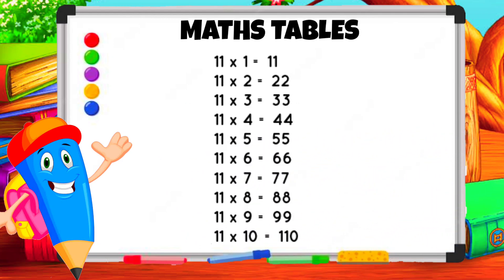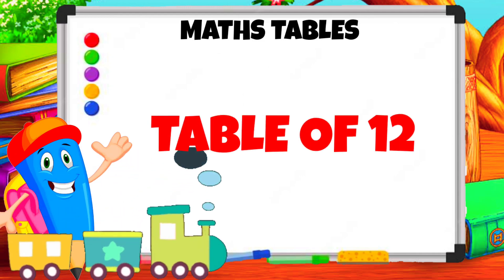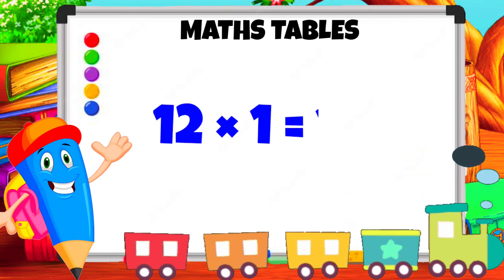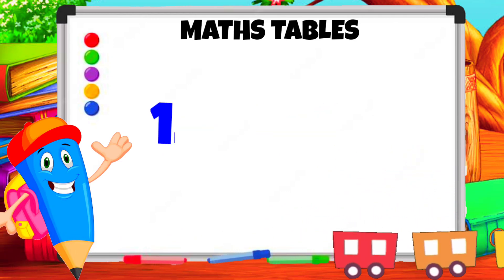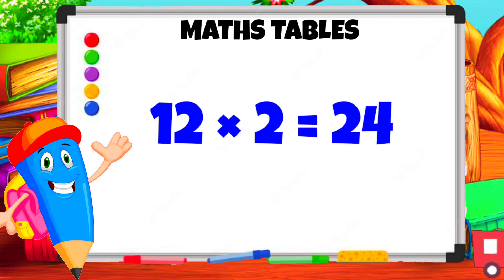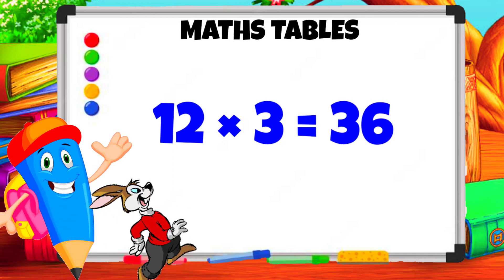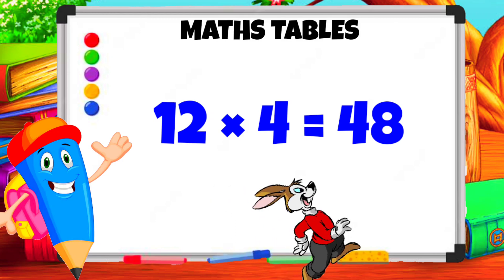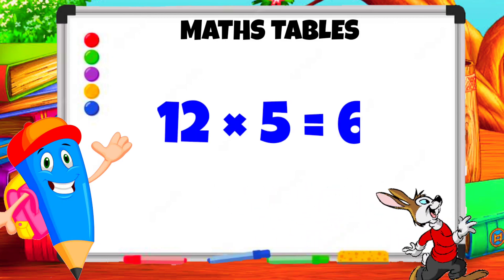Table of 12. 12 1s are 12. 12 2s are 24. 12 3s are 36. 12 4s are 48. 12 5s are 60.